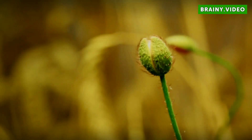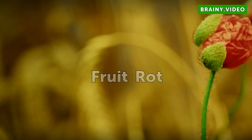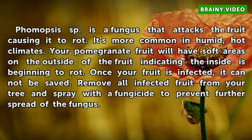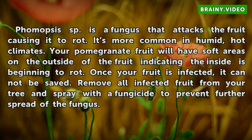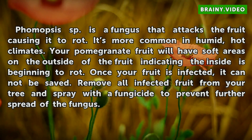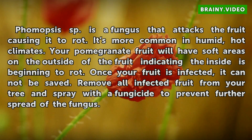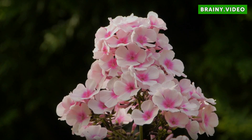Fruit rot. Phomopsis sp. is a fungus that attacks the fruit, causing it to rot. It is more common in hot, humid climates. Your pomegranate fruit will have soft areas on the outside indicating the inside is beginning to rot. Once your fruit is infected, it cannot be saved. Remove all infected fruit from your tree and spray with a fungicide to prevent further spread of the fungus.